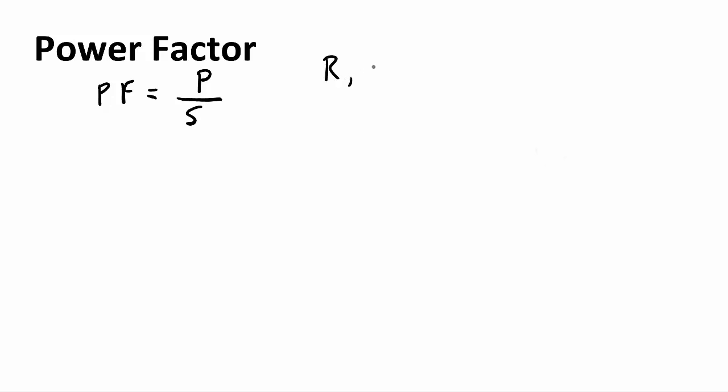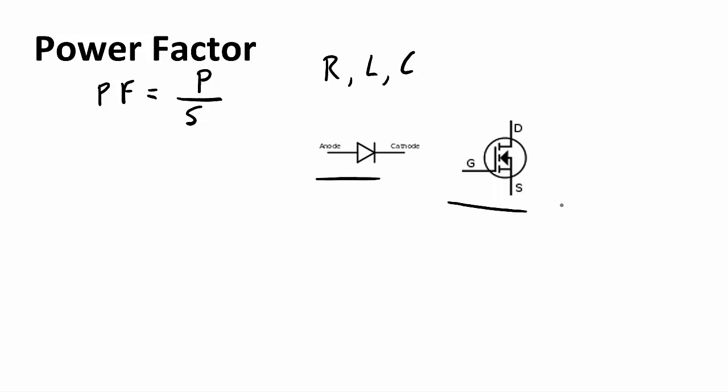When the load is linear — meaning only resistive, inductive, and capacitive elements are present — the power factor is due solely to those R, L, and C elements. However, when a load is nonlinear, such as in a rectifier or switch-mode power supply with diodes and switches, a distortion factor must also be included. This video deals only with linear loads.